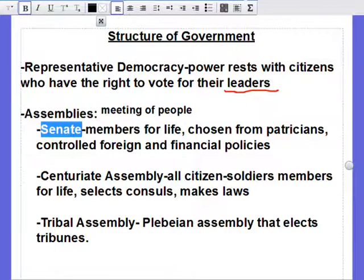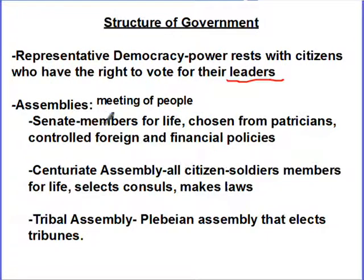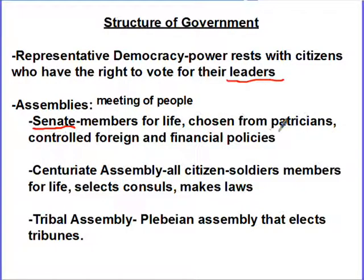The Senate — members are chosen from the patricians and serve for life. They control foreign policy and financial policy. The Senate is kind of the richer folks' assembly and has most of the power in the Roman Republic. The wealthy patricians would vote in the Senate, elect leaders to make decisions for them, and then the Senate would get together, debate, and make decisions.